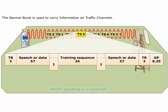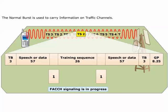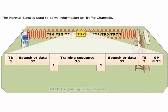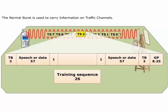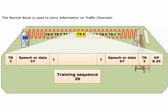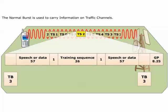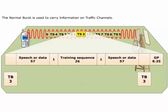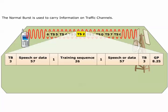The flag bits, or stealing flags, indicate FACCH signaling is in progress. The training sequence is a known bit pattern used by the equalizer to create a channel model. The tail bits (TB) are always 0, 0, 0, and they are used to help the equalizer indicate the start and stop points.